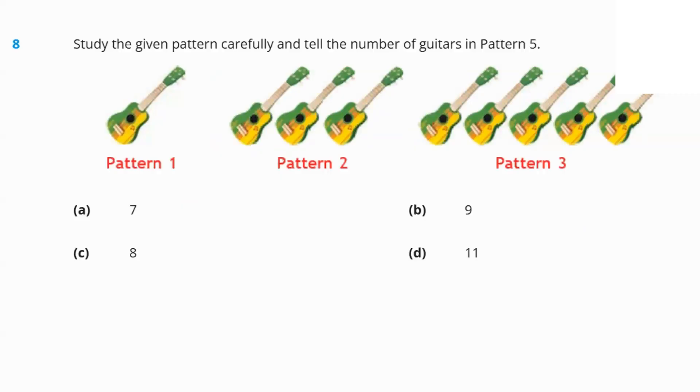Next question number eight, follow the pattern and tell the number of guitars in pattern five. In the first pattern, we have one guitar. In the second pattern, we have three guitars increased by two. In the third pattern, it's three plus two, five guitars. Basically, it's increasing by two. So, in the fourth pattern, five plus two, seven. And in the fifth pattern, seven plus two, nine. Option B, nine is the answer.